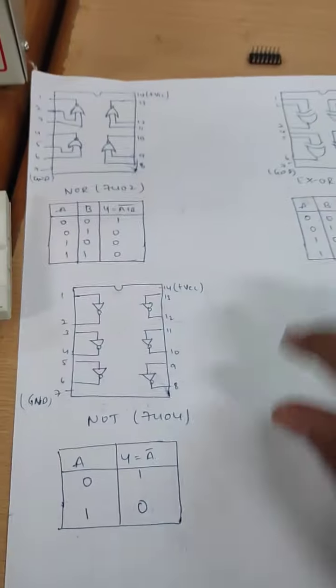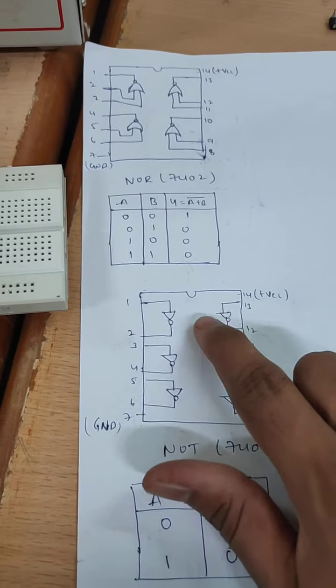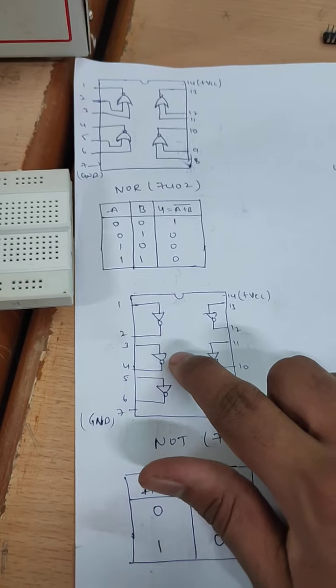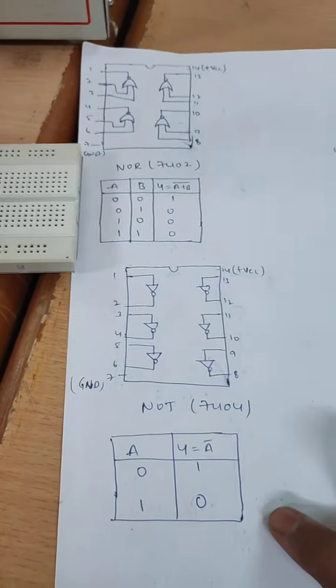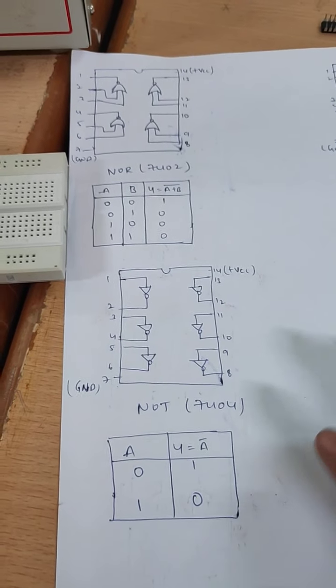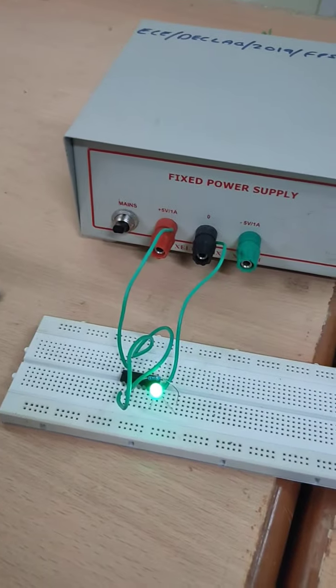And this is NOT gate. NOT gate is also different. Pin number 1 is input, pin number 2 is output, 3 is input, 4 is output, like this. This is the truth table for NOT gate. That's all. This is the verification of logic gates.